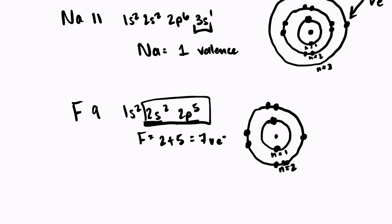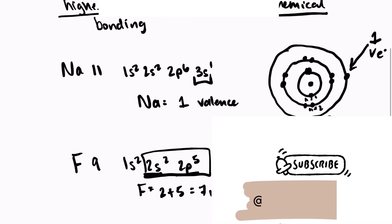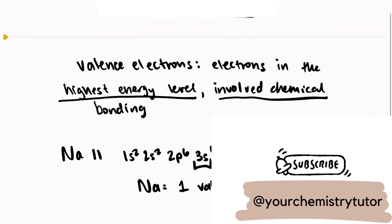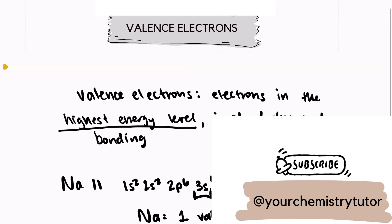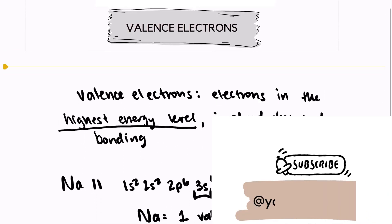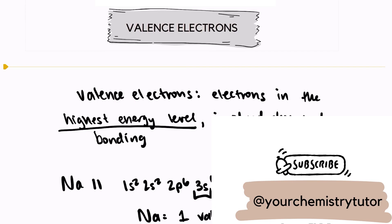Valence electrons are the electrons in the highest overall energy level. So this was just a quick review on valence electrons. To figure out how exactly electrons are involved in bonding, check out my video on the octet rule. Thank you so much for stopping by.